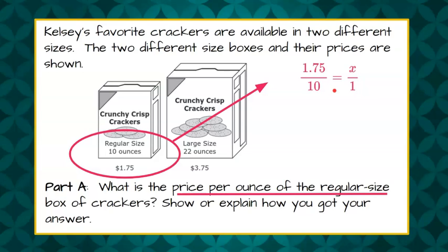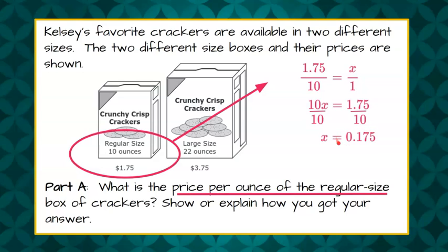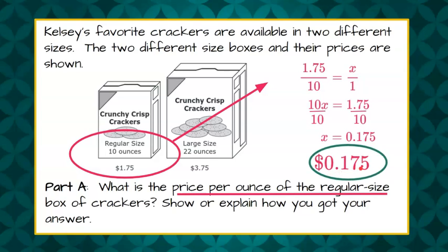So we're going to use cross product property: 10 times X equals $1.75 times 1. Then we're going to divide each side by 10 and identify that X is equal to 0.175. This is what we call a terminating decimal, and because it's unit price, we're going to leave it as it is. If you ever look in a grocery store, you'll notice that our unit price is sometimes to a thousandth. So our answer is $0.175.